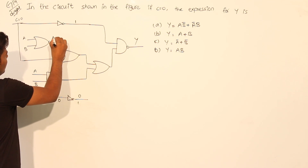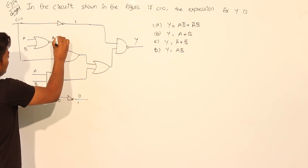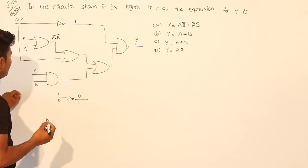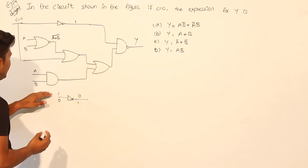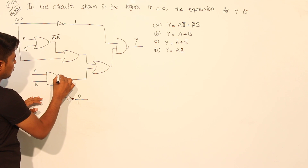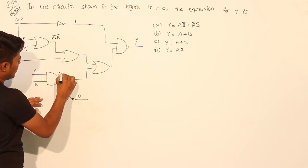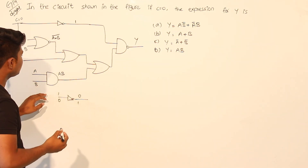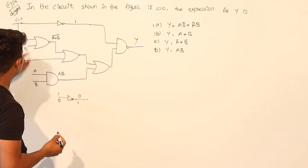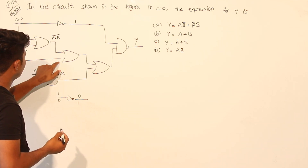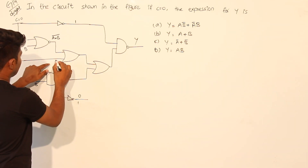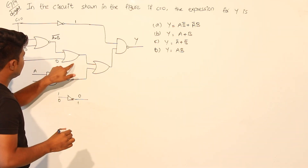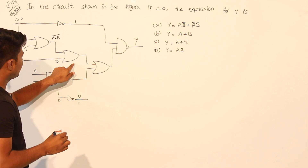This is the NOR gate, so its output will be (A + B) bar. This is an AND gate, so the output will be A dot B.